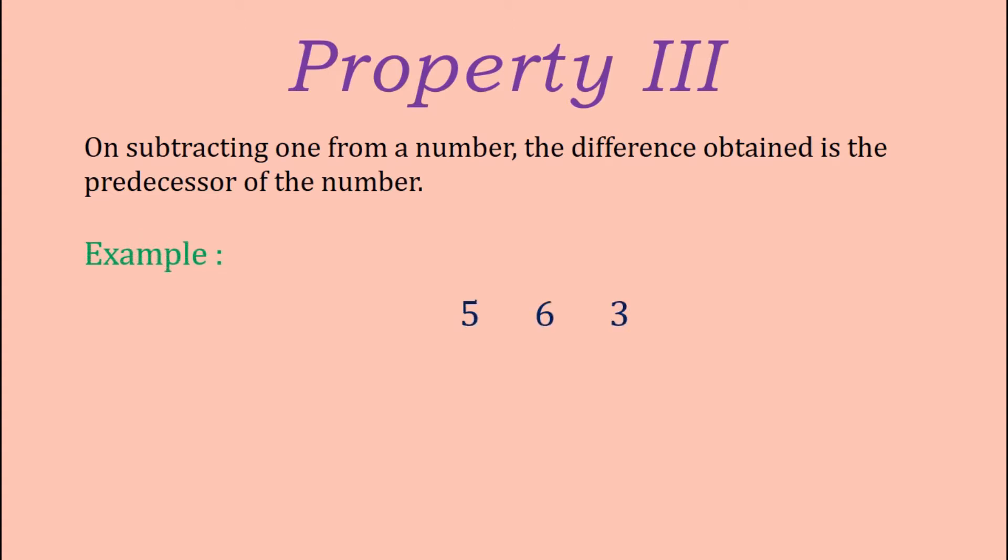We have the numbers 563 and 1, where 1 is the subtrahend. When we subtract 1 from 563, we get the answer as 562. That is, 562 is the predecessor of 563.